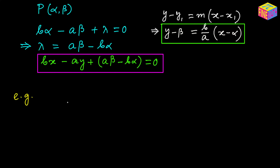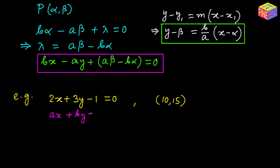Let's take an example. Suppose the given equation of a straight line is 2X plus 3Y minus 1 equals 0, and we have to find the equation of a straight line perpendicular to this line that also contains point P with coordinates (10, 15). Comparing with AX plus BY plus C equals 0, we get A equals 2, B equals 3, and C equals negative 1.